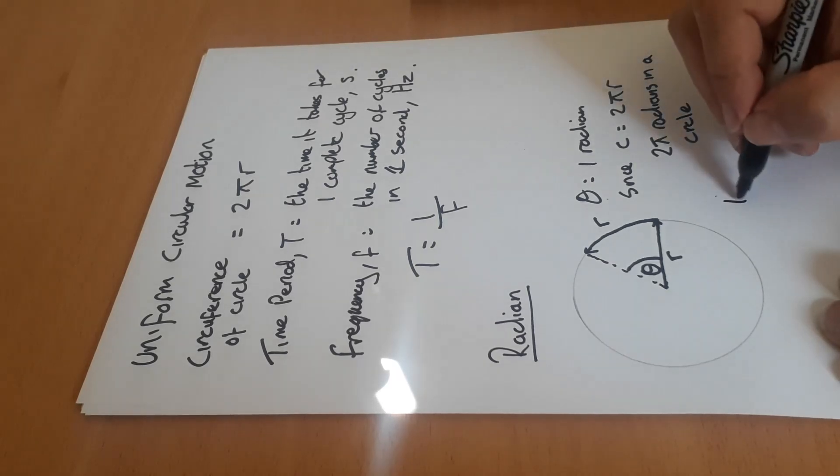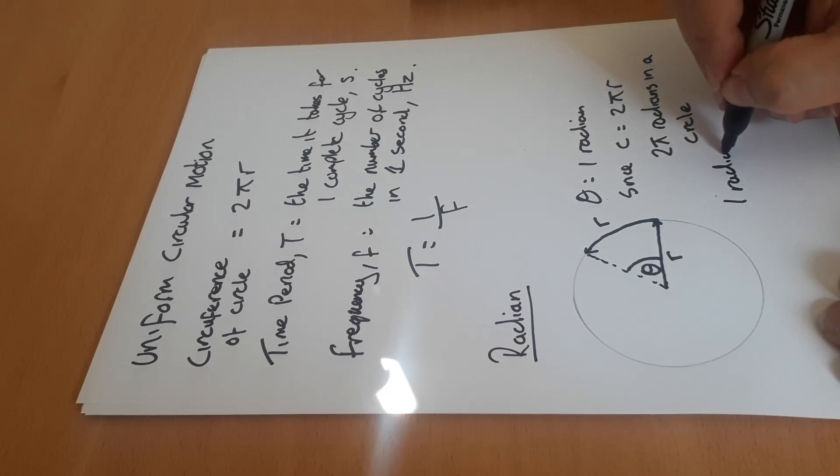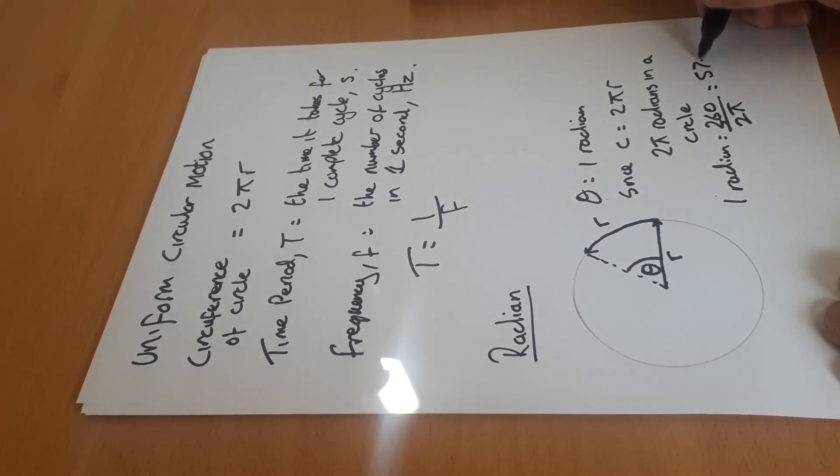Which means that one radian is equal to 360 over 2π, which is 57.3 degrees approximately.